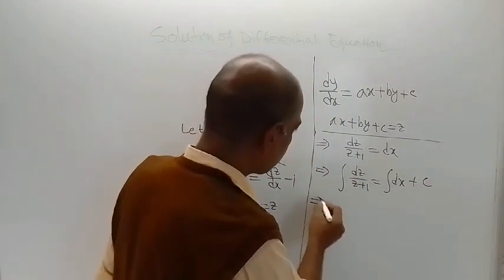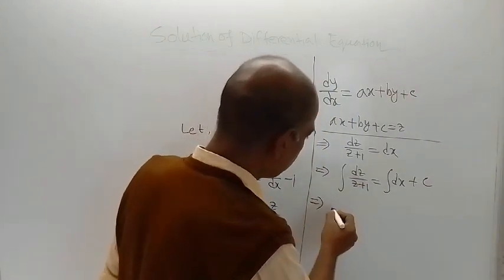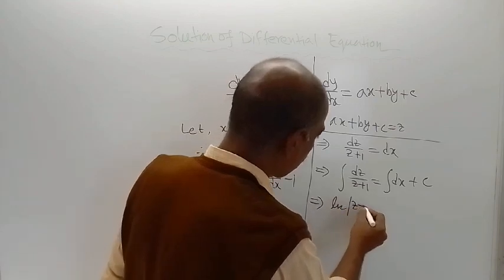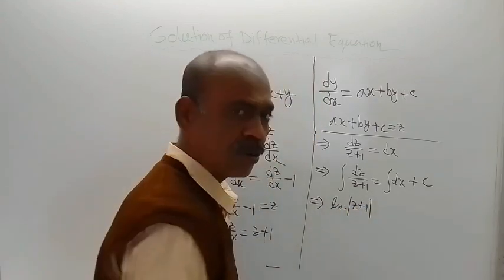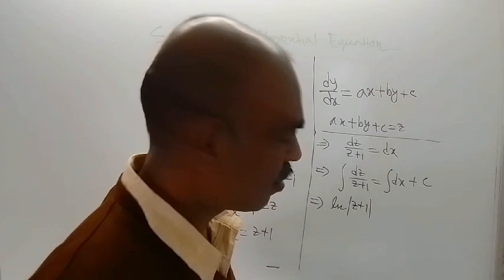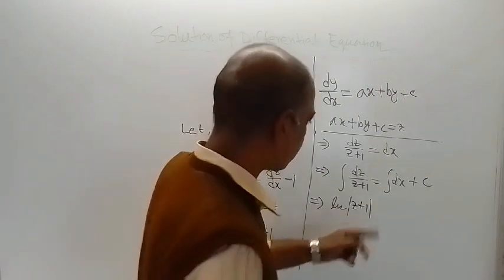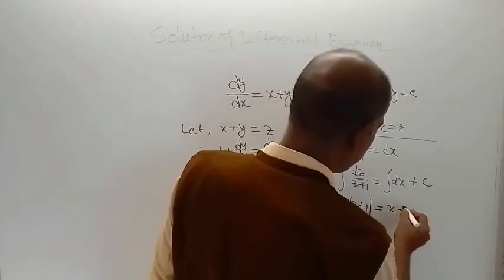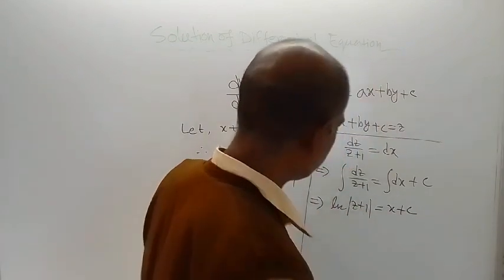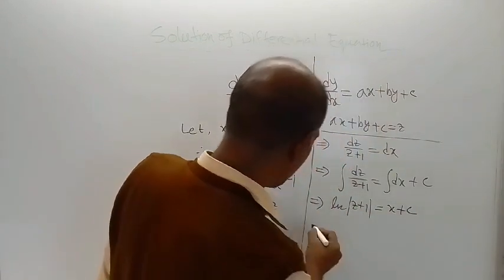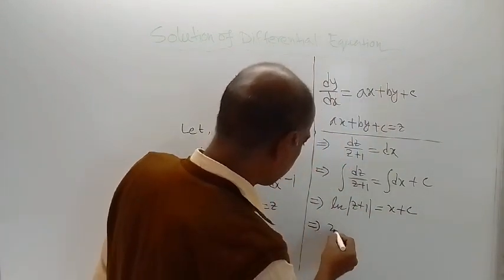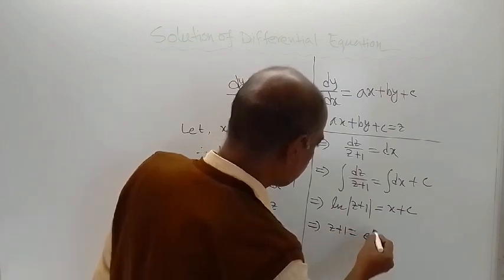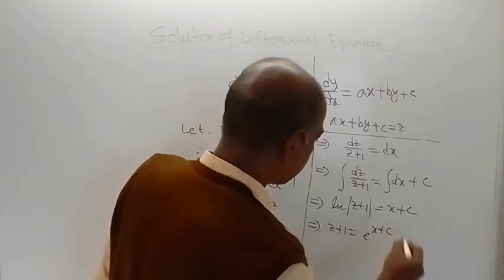So here, what we are getting is log of (z plus 1) — this is of course natural log, base e — log of (z plus 1) is equal to x plus c. Then, z plus 1 is equal to e to the power (x plus c).